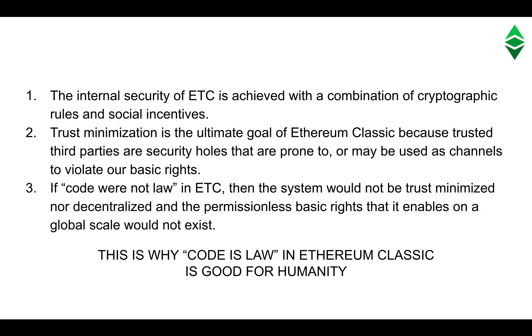Final comments: the internal security of ETC is achieved with a combination of cryptographic rules and social incentives. Trust minimization is the ultimate goal of Ethereum Classic, because trusted third parties are security holes that are prone to, or may be used as channels to, violate our basic rights. If code were not law in ETC, then the system would not be trust minimized nor decentralized, and the permissionless basic rights that it enables on a global scale would not exist. This is why code is law in Ethereum Classic is good for humanity.